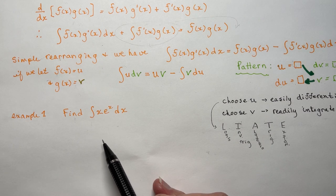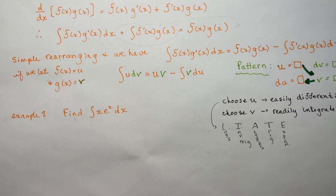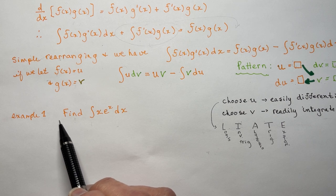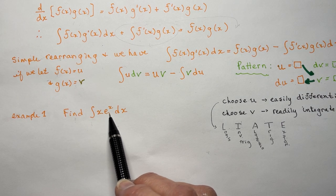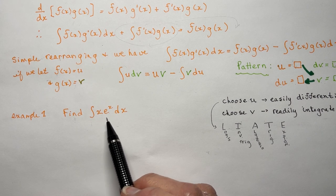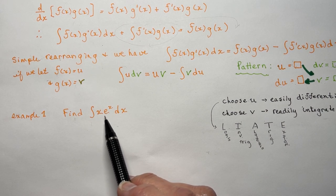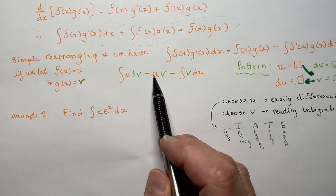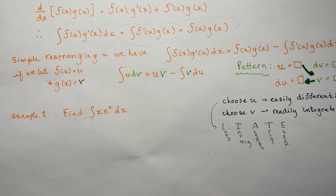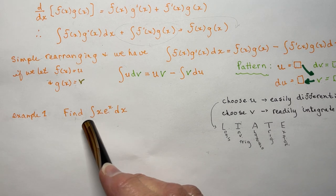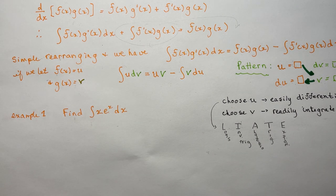So I'm going to choose one of these. This is a product, so it's a product rule situation that's going to require me to use integration by parts. I'm looking at these — I have x and I have e^x. So which one should I use to be u?